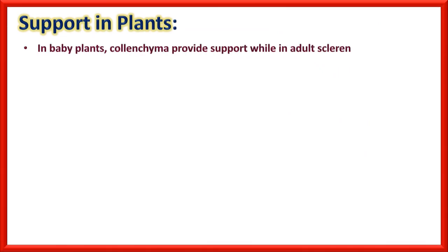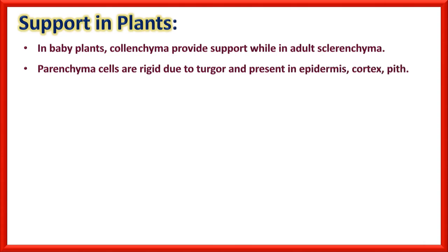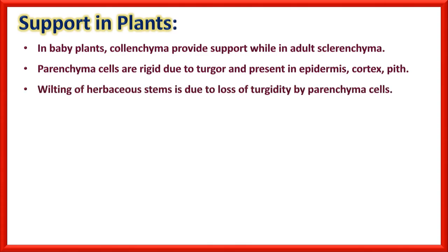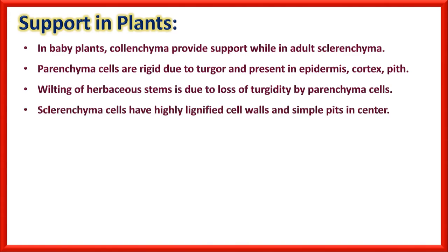Support in plants: In young plants, collenchyma provides support while in adult plants, sclerenchyma provides support. Parenchyma cells are rigid due to turgor and are present in the epidermis, cortex, and pith. Wilting of herbaceous stems is due to loss of turgidity by parenchyma cells. Sclerenchyma cells have highly lignified cell walls containing rich lignin, and simple pits are also present. Most sclerenchyma cells are non-living.